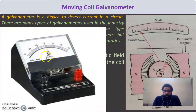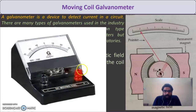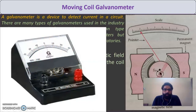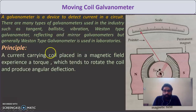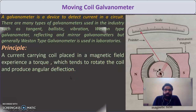Here is the actual image of a galvanometer as seen in the lab. It has a positive terminal and a negative terminal. Current enters from one end and passes through the coil. The pointer is at zero initially and can deflect to either side — left or right — depending on the direction of current.